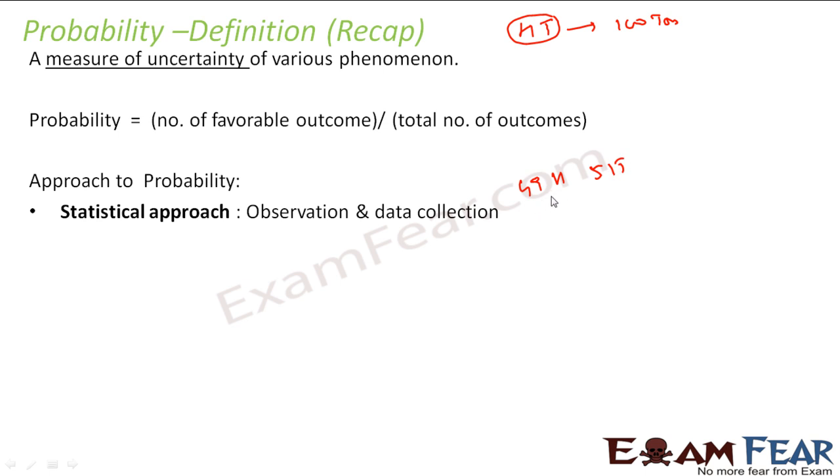Then we will say the probability of getting head was 49 by total number of tosses, that is 100, and probability of tail is 51 by 100. This is one approach, the crude approach, but this is very difficult because every time you don't have the option to collect data and sometimes it's a cumbersome process.